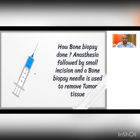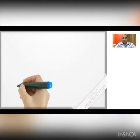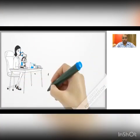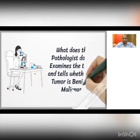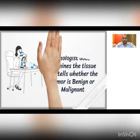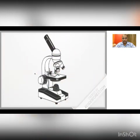The first key step is the use of anesthesia, which can be local or general anesthesia. A bone biopsy needle is inserted into the bone and a small tissue sample is sent to the pathologist. The pathologist examines this tissue and determines whether it is benign or malignant, depending on the characteristics of the tissue received.